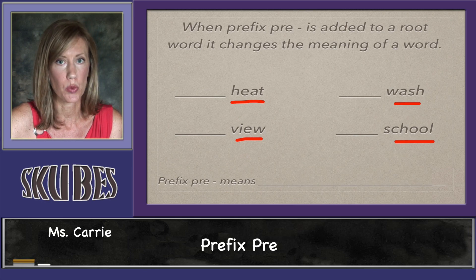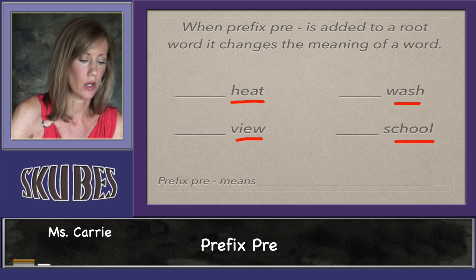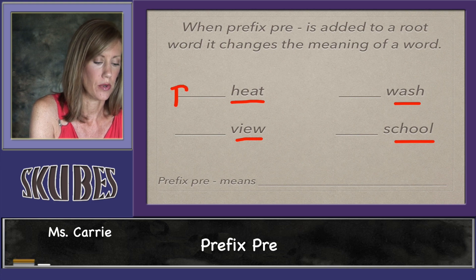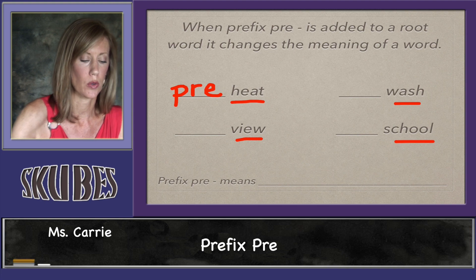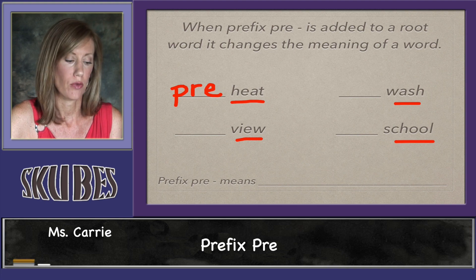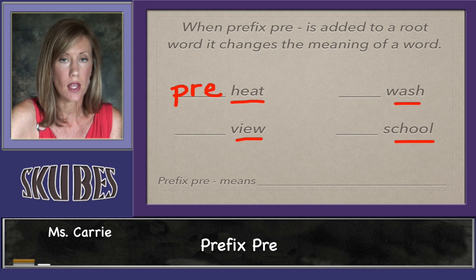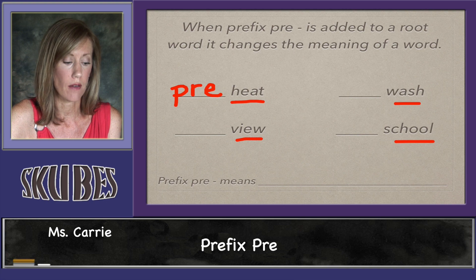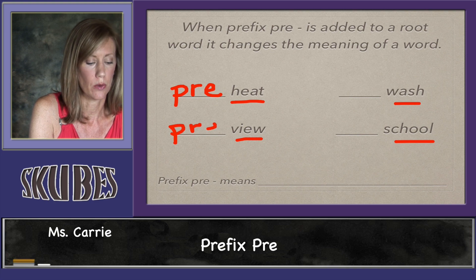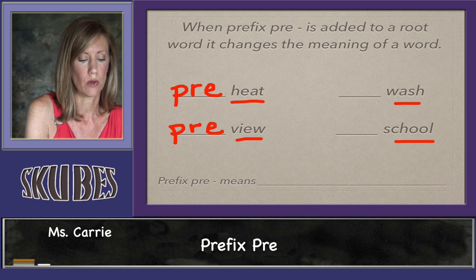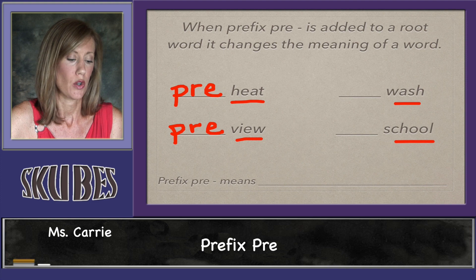If we put 'pre' in front of 'heat,' we get the word 'preheat.' If we preheat the oven, that means we're going to heat the oven before we cook something. So 'pre' means before. If we put 'pre' in front of 'view,' we get 'preview,' so you're going to view something before — like a movie preview.